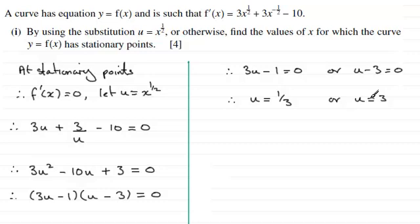Now, we know that u is equal to x to the power half. So, we've therefore got x to the power half then, would equal one-third. Or, x to the power half, would equal the 3. Knowing that x to the power half is the same as square root of x, then, to bring it up to x, all I've got to do is square both sides. So, if I square the third, a third squared is one-ninth. And if I square the 3 here, I end up with x equaling 9. Alright?